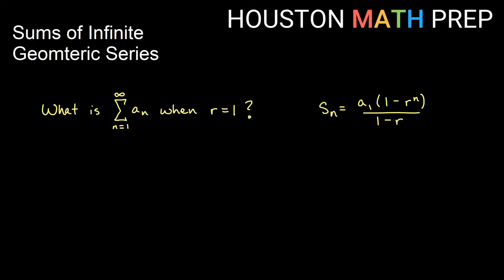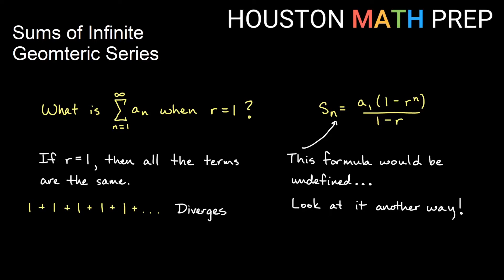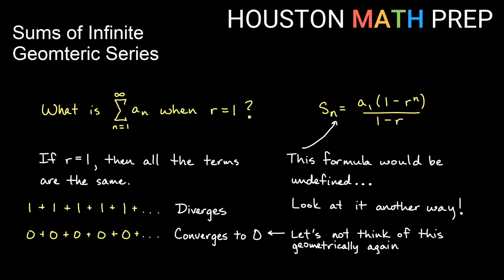In the case where r equals exactly 1, we can't even use the partial sum formula — if you plug 1 in, the bottom becomes 1 minus 1 which is 0, and dividing by 0 is undefined. But thinking more simply: if r is 1, you multiply by 1 each time, so all terms are the same. Adding the same number forever gives an infinitely large amount — this diverges. The exception would be if all terms are 0, but that's trivial.